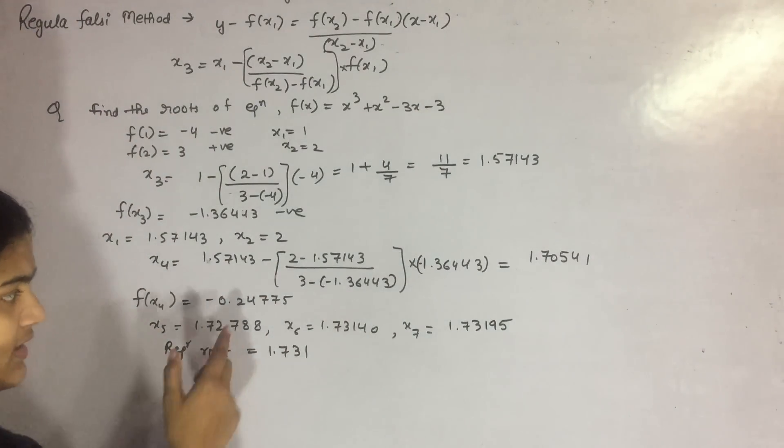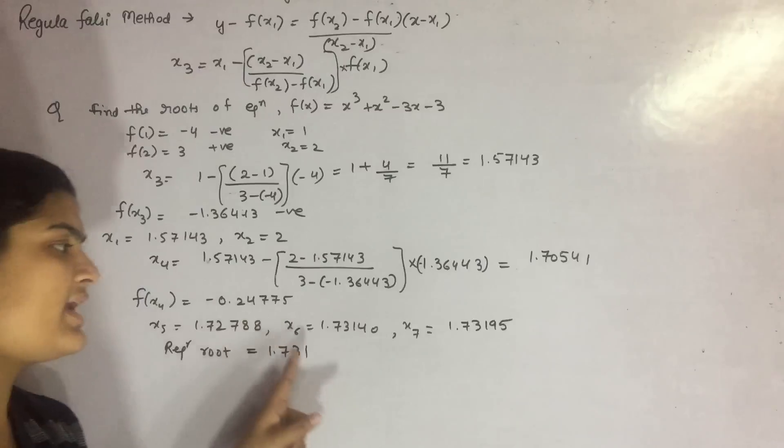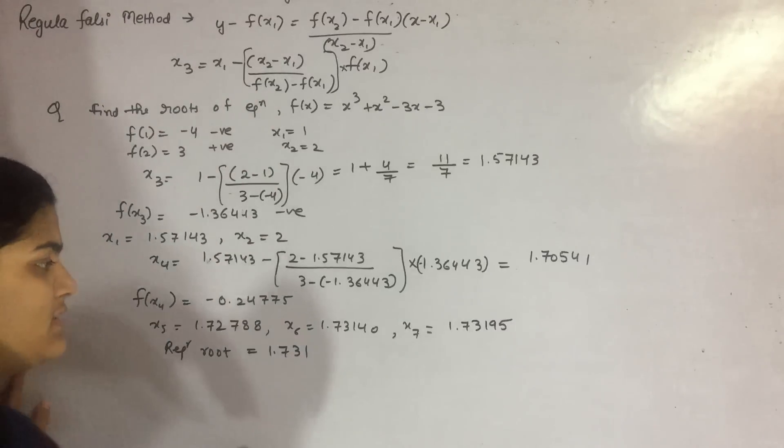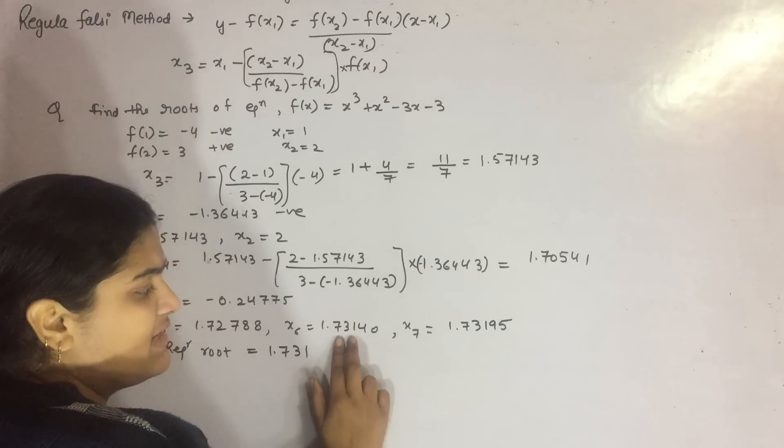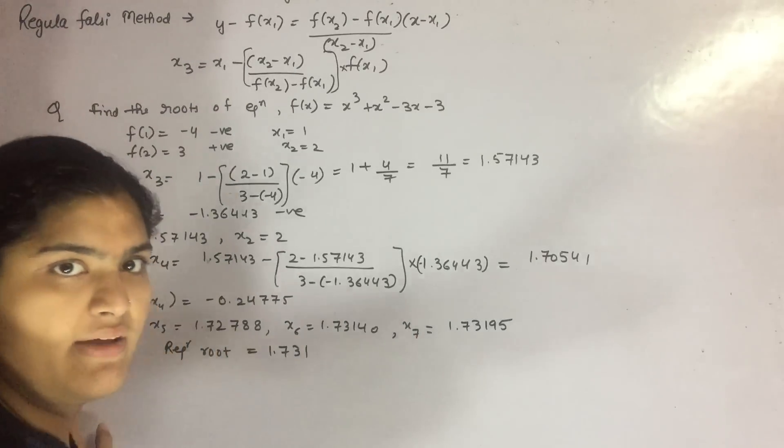Now again, you have to take a positive value, which means your f(2). Then you have to find x5, then x6, then x7. When you keep repeating the process, you will find that the last two values will be the same up to three decimal places—that means 1.731.